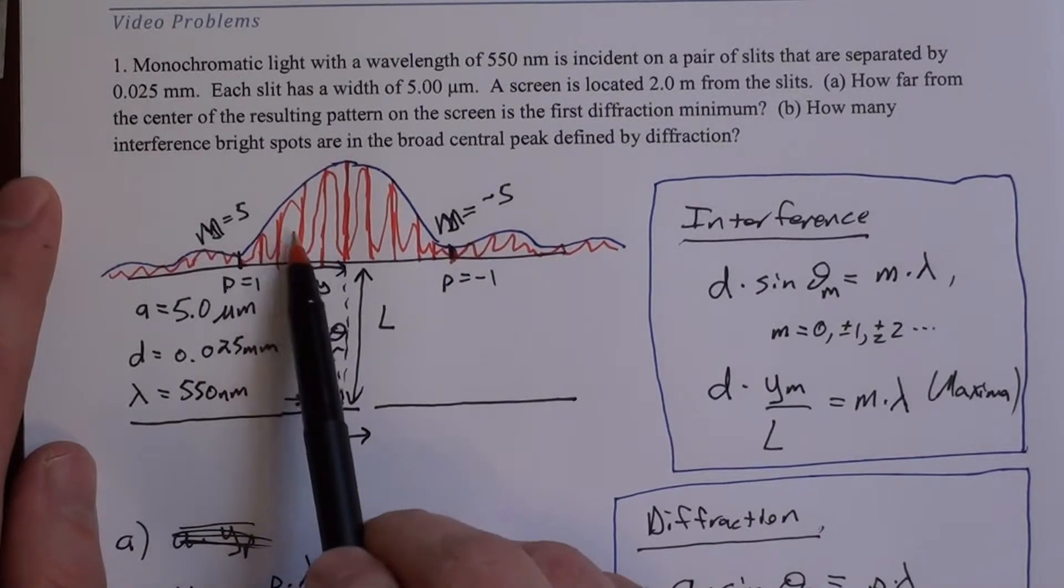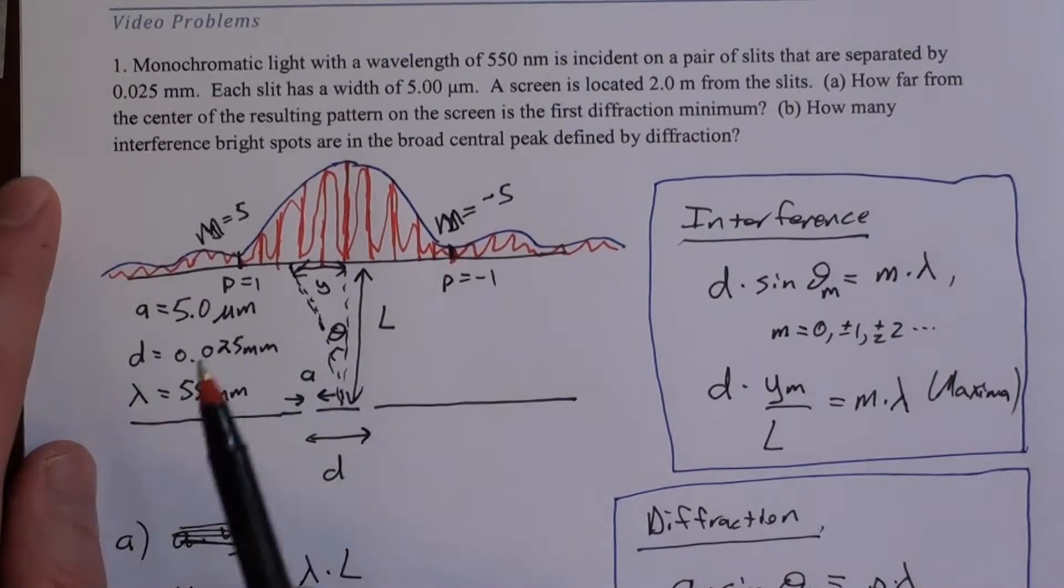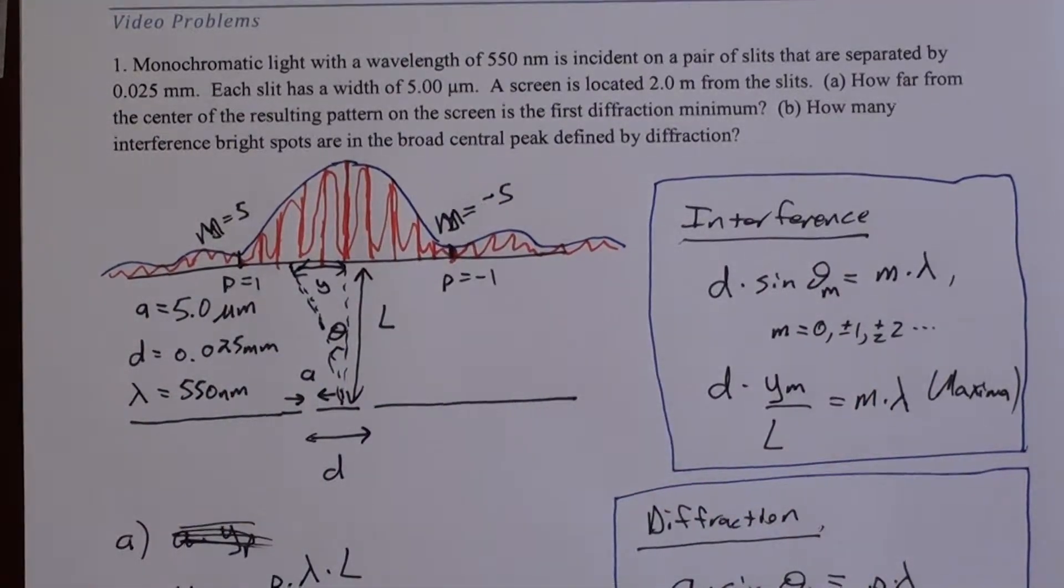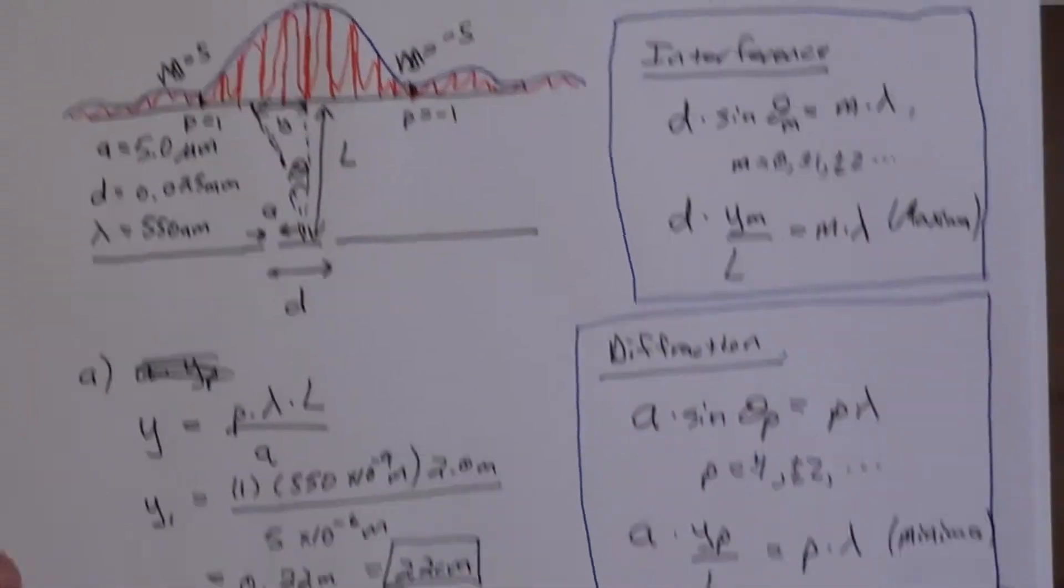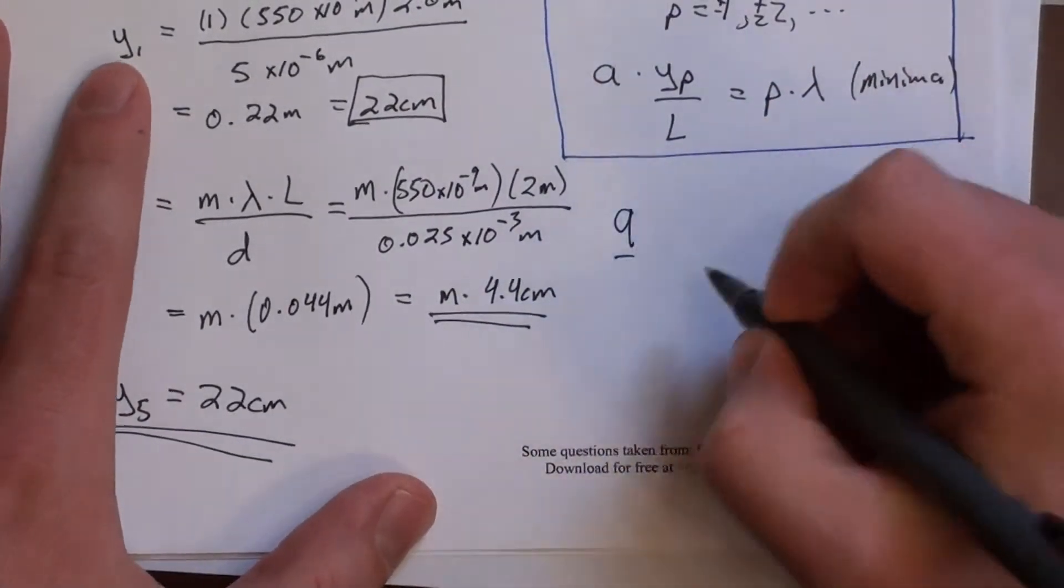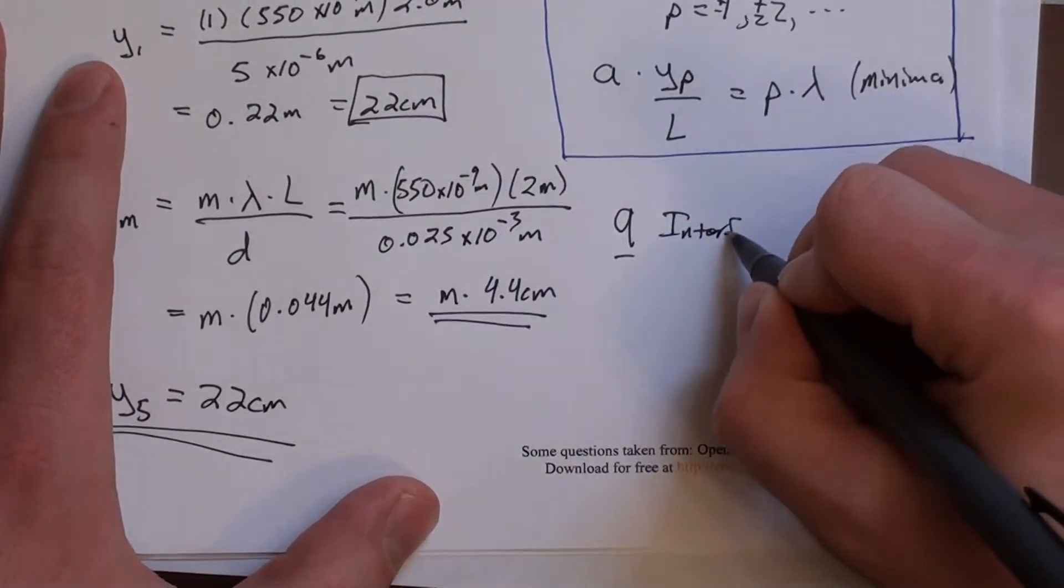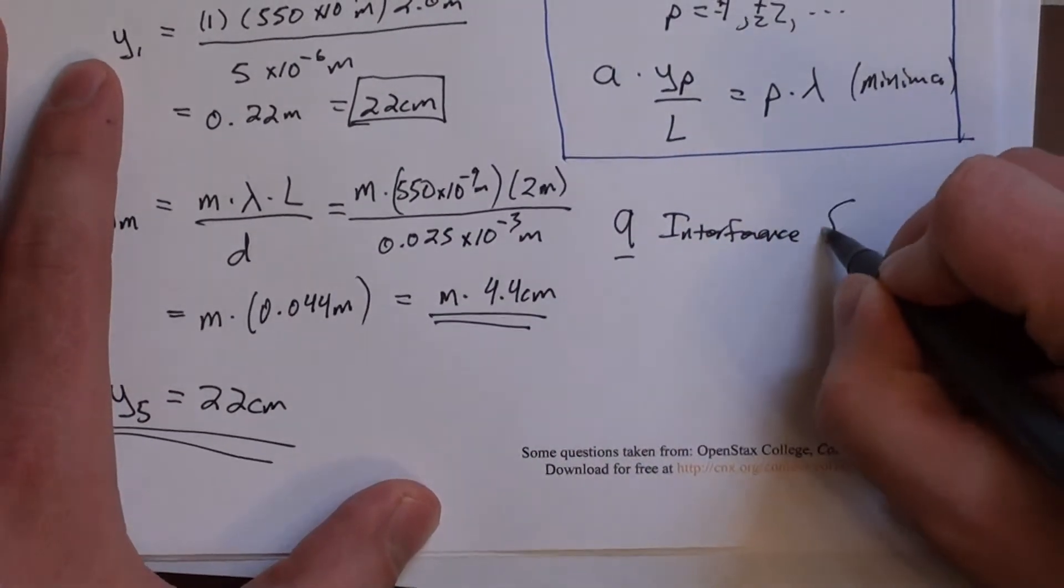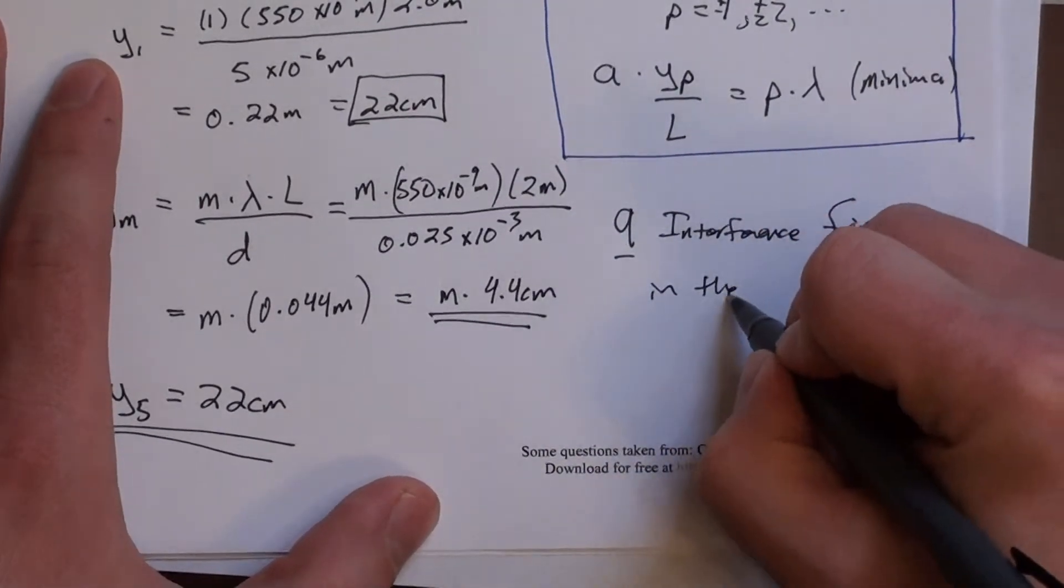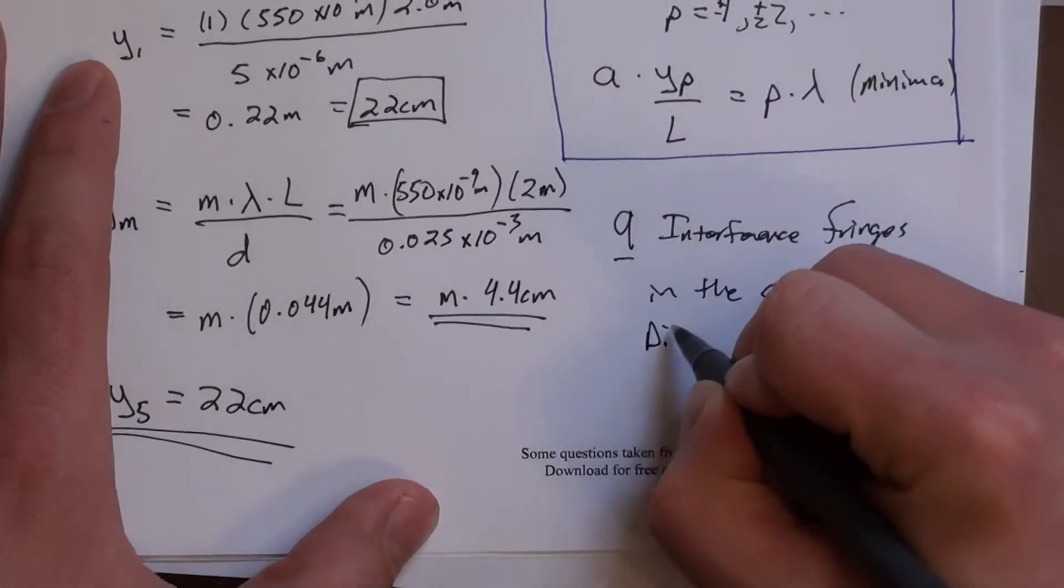And if you label them here it's easier to see, but I've kind of run out of space. So in total, there are 9 interference fringes in the central diffraction peak.